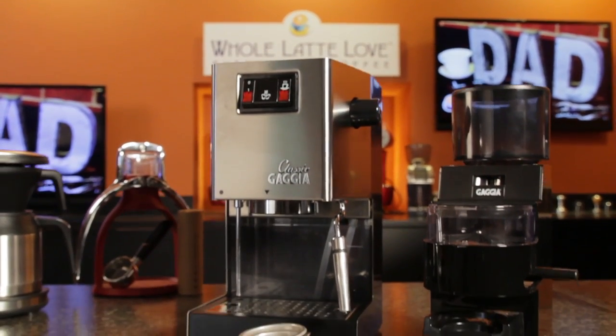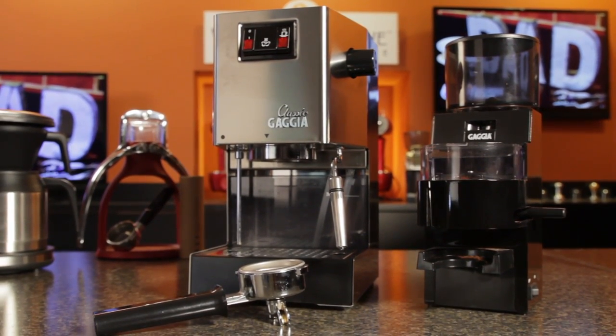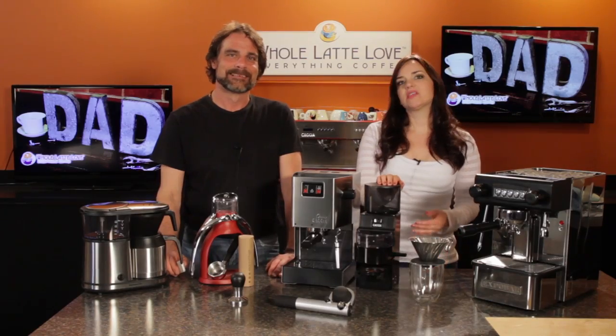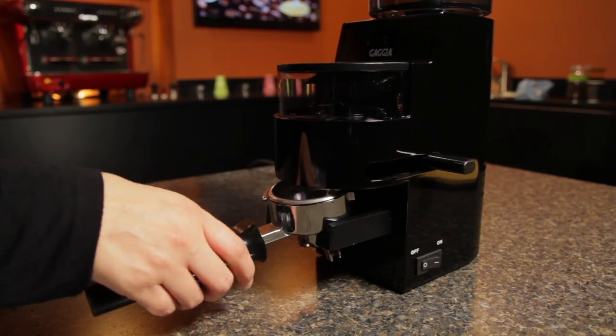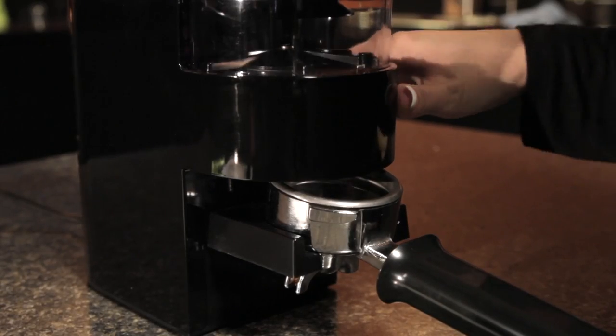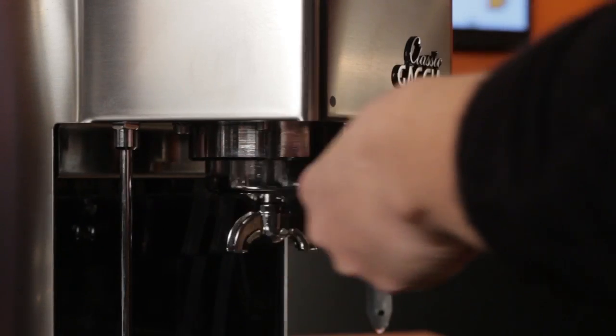For espresso closer to home, a favorite mid-level machine and grinder package is the Gaggia Classic and the MDF Grinder. This combo is a definite step up from entry-level machines. A fresh grind paired with Classic's commercial size and weight portafilter makes a big difference in espresso quality.